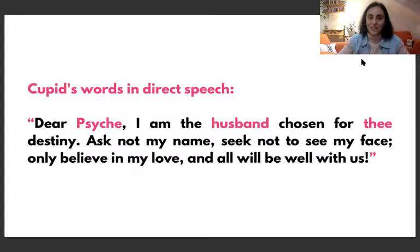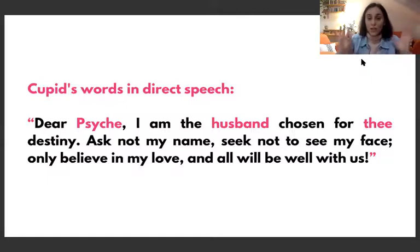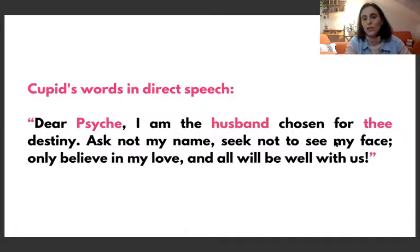Cupid's words in direct speech: 'Dear CK, I am the husband chosen for thy destiny' — note this is the old English form meaning 'your destiny.' 'Ask not my name, seek not to see my face, only believe in my love and all will be well with us.' This is Cupid's command to CK: don't ask my name, don't try to see my face — just trust me, believe in my love and everything will be fine.